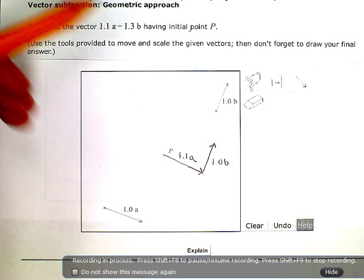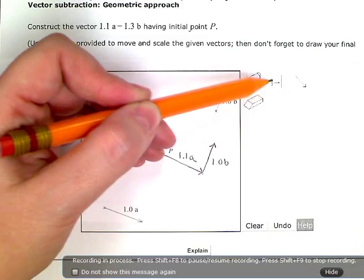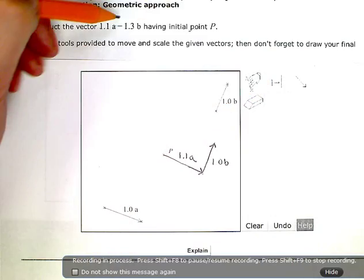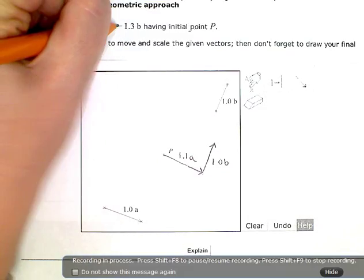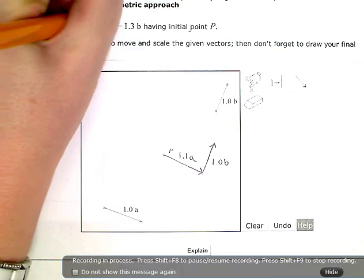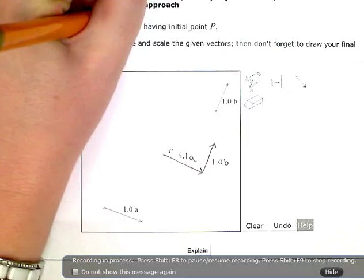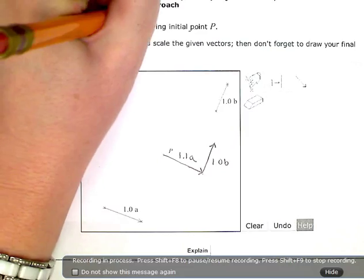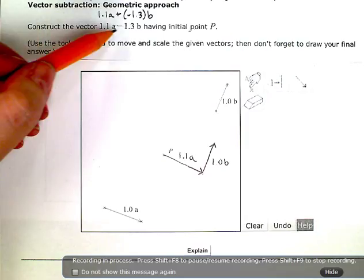Now I'm going to change the length or the magnitude of b again. So grab this tool and this time, remember, subtraction is the same as adding a negative. So I could rewrite this as 1.1a plus negative 1.3b.